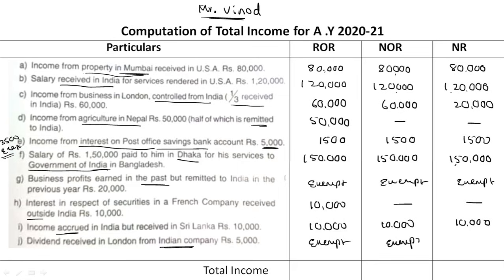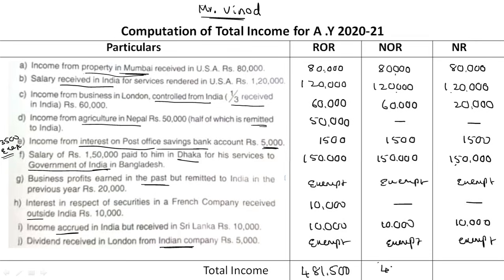The total income for ROR is Rs. 4,81,500. Total income for NOR is Rs. 4,21,500. And total income of non-resident is Rs. 3,81,500. This is a 15-mark question.